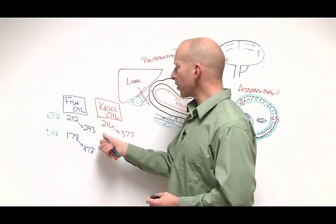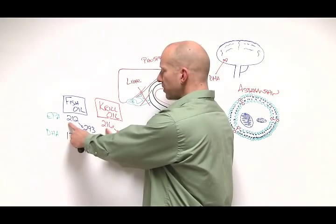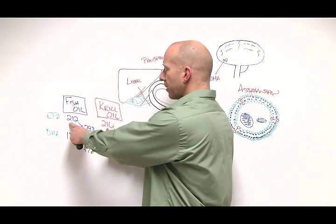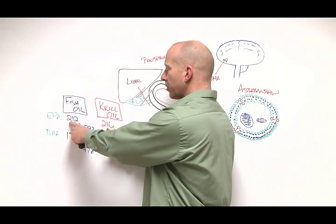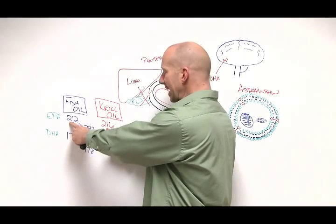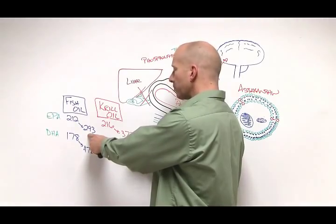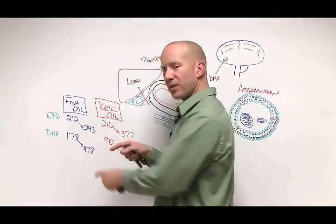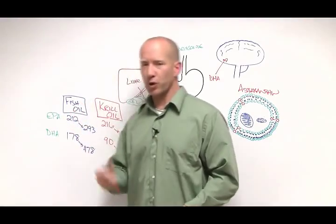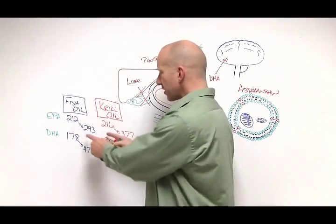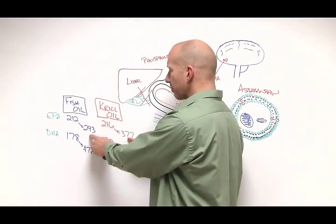Compare that to the krill oil group. If you notice, they were taking about the same milligram dosage of EPA, 212 versus 216. Yet at the end of 30 days, the krill oil group had almost 100 points more EPA in their blood level than did the fish oil group. So basically they were taking the same amount, but they had more in their blood.